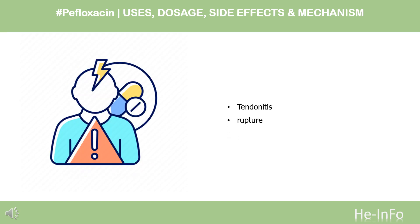Side effects: Tendinitis and rupture, usually of the Achilles tendon, are class effects of the fluoroquinolones, most frequently reported with Pafloxacin. The estimated risk of tendon damage during Pafloxacin therapy was estimated by the French authorities in 2000 to be one case per 23,130 treatment days, as compared to ciprofloxacin where it has been estimated to be one case per 779,600.